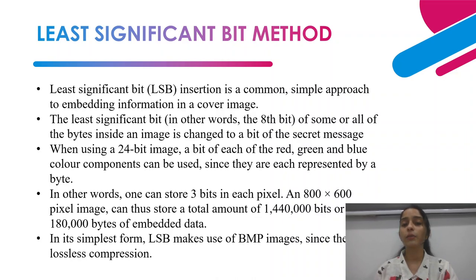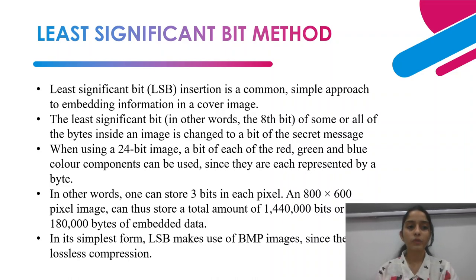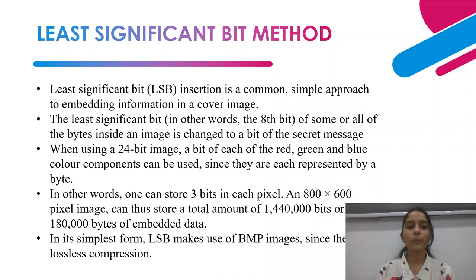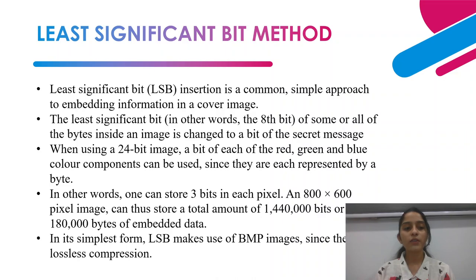Another method is the Least Significant Bit (LSB) method, also called the redundant bit method. We embed our secret message into those redundant bits of the image that are not used as pixel data. Every eighth bit of the image is a redundant bit, and some or all bytes inside an image are changed to a bit of the secret message. One can store three bits in each pixel, so an 800×600 pixel image can store a total of 1,440,000 bits or 180,000 bytes of embedded data. LSB makes use of BMP image format.